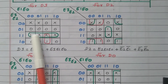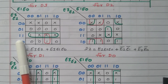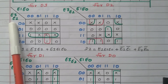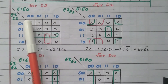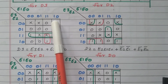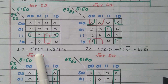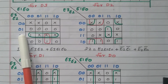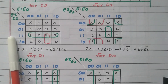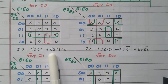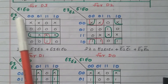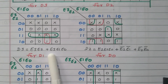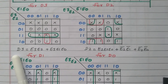First grouping: 4 cells are grouped together — corresponding to row E3, E2 = 1, 1. The column values cancel (0,0 cancelled by 1,1; 0,1 cancelled by 1,0), so only E3·E2 remains. Second grouping: 2 cells corresponding to rows E3E2 = 1,1 and E3E2 = 1,0 — the first value E3 is common; E2 cancels. The column is E1,E0 = 1,1, giving E1·E0. So the expression for D3 is E3·E2 + E3·E1·E0.